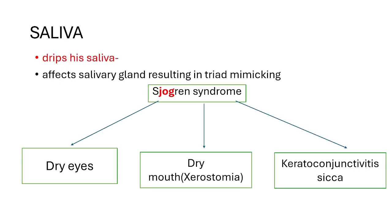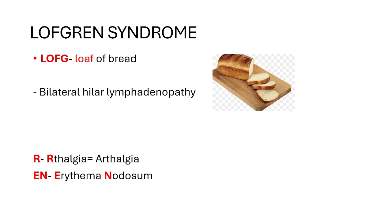The shark was dripping saliva — this tells us sarcoidosis affects the salivary gland, mimicking Sjögren's syndrome. In the mnemonic, the violent shark was jogging — 'jog' for Sjögren's syndrome. Sarcoidosis mimics the triad of Sjögren's syndrome, which includes dry eyes, dry mouth (xerostomia), and keratoconjunctivitis sicca. That covers the salivary gland involvement in sarcoidosis.